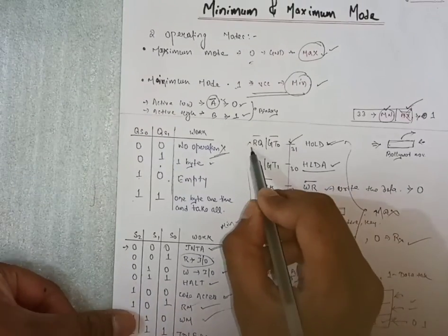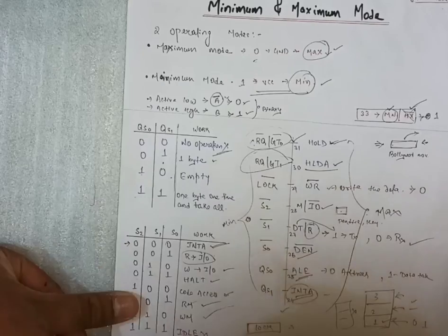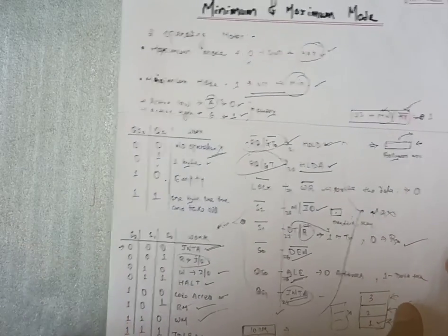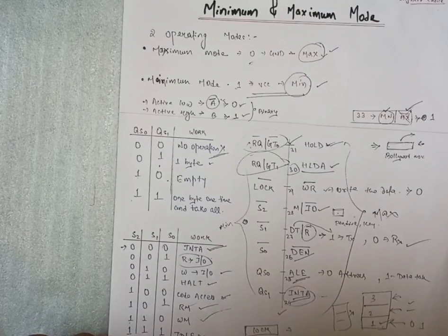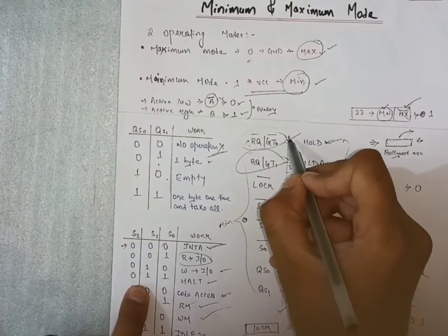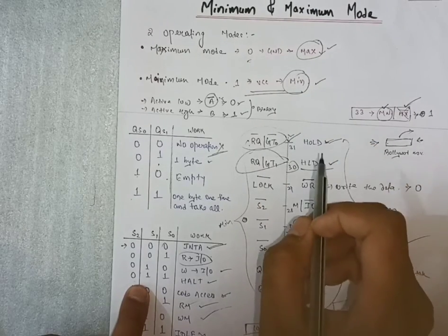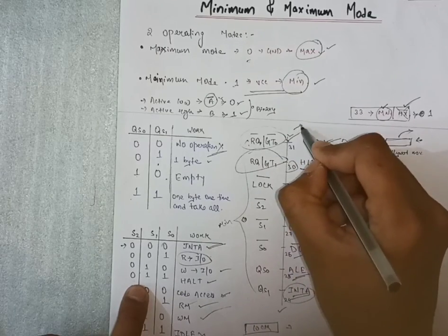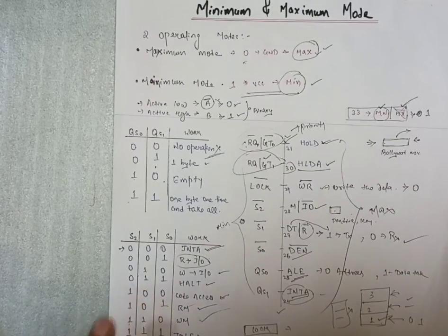After that, request and grant. That is actively low pin and second is actively high pin, the 31 and 30. Both pins are request and grant. It will request and grant the signal. Request and grant. First one is having more priority than this. That's all about minimum and maximum modes.